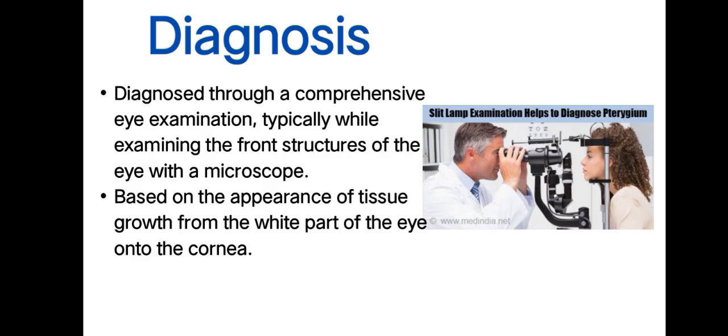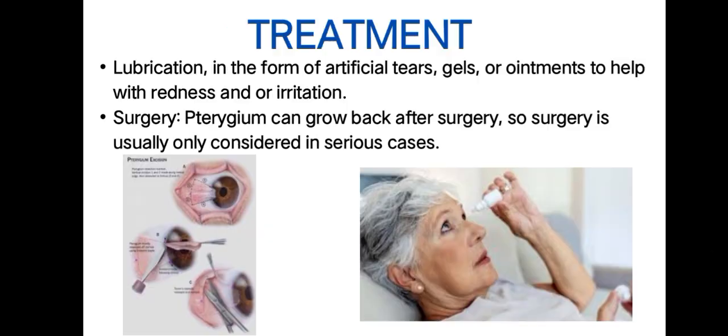Diagnosis. Pterygium is diagnosed through a comprehensive eye examination, typically while examining the front structure of the eye with a microscope, based on the appearance of tissue growth from the white part of the eye onto the cornea.